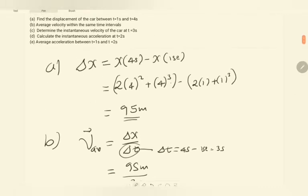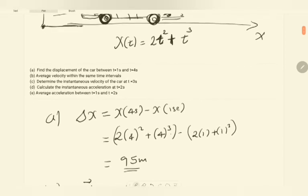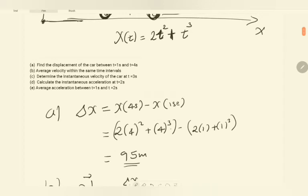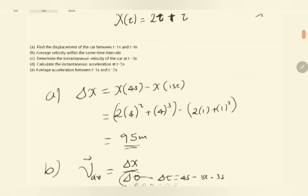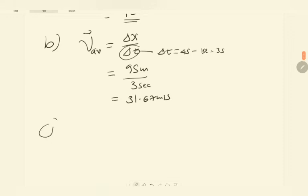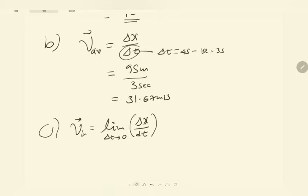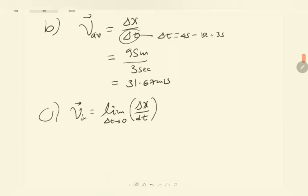Let's go ahead to part c. In part c, we are asked to determine the instantaneous velocity of the car at t = 3 seconds. The instantaneous velocity is the limit as Δt goes to zero of Δx/Δt, which is simply the limit of the average velocity. This can be written in differential form as the time derivative of the position with respect to time.